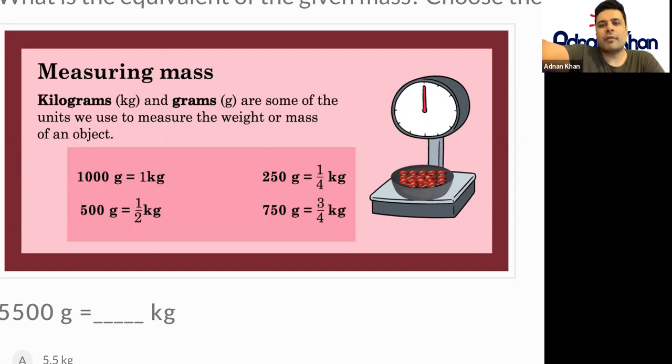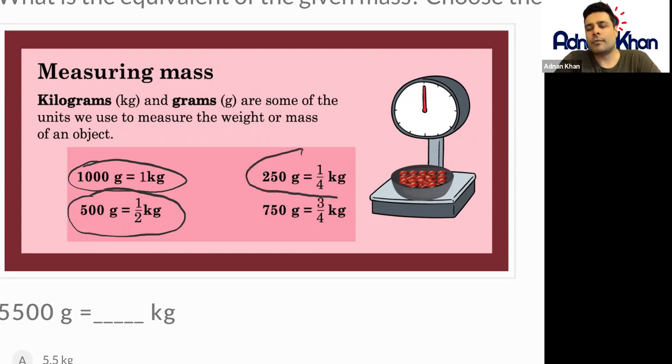And 500 grams stands for half a kilogram. So a quarter of a kilogram is 250 grams because a quarter of a thousand is 250.